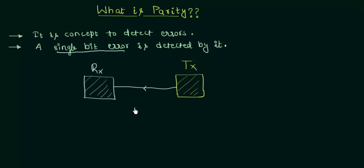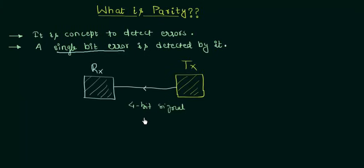Let's say the signal is a 4-bit signal. We know that in this channel there are many factors that affect the transmitted signal. There are noises involved, and because of that noise, some bits may change from 0 to 1 or 1 to 0 — we can say high to low or low to high. If that happens, we can detect it by parity.